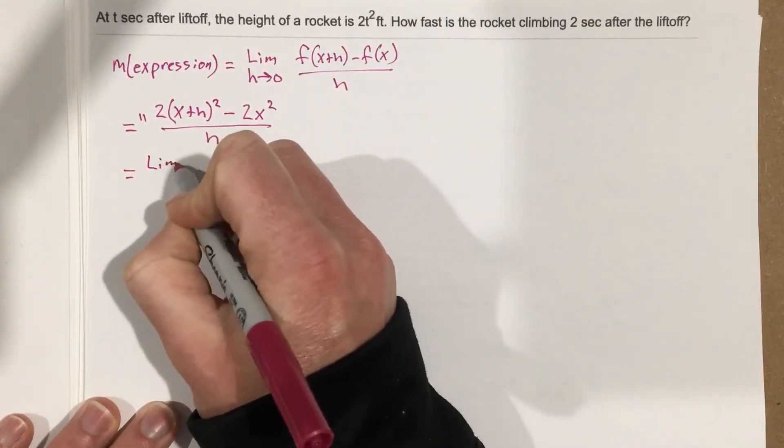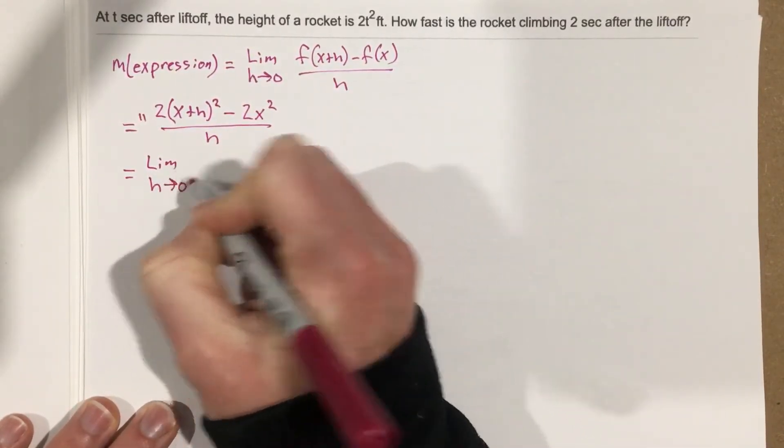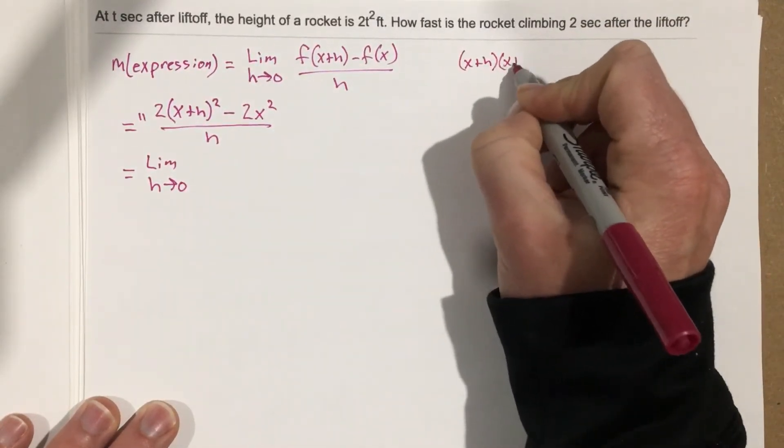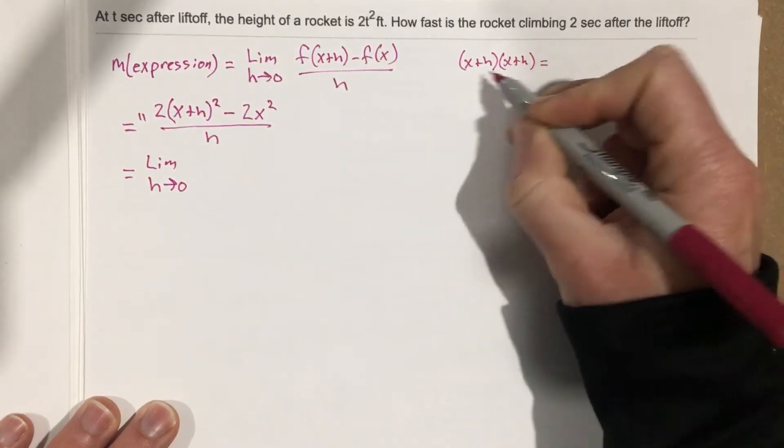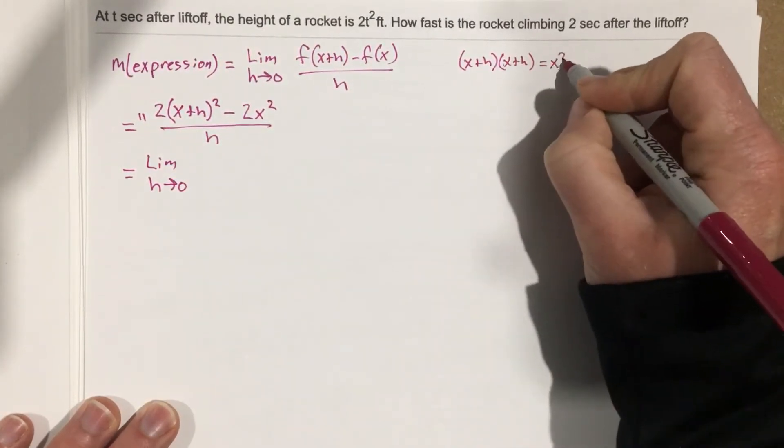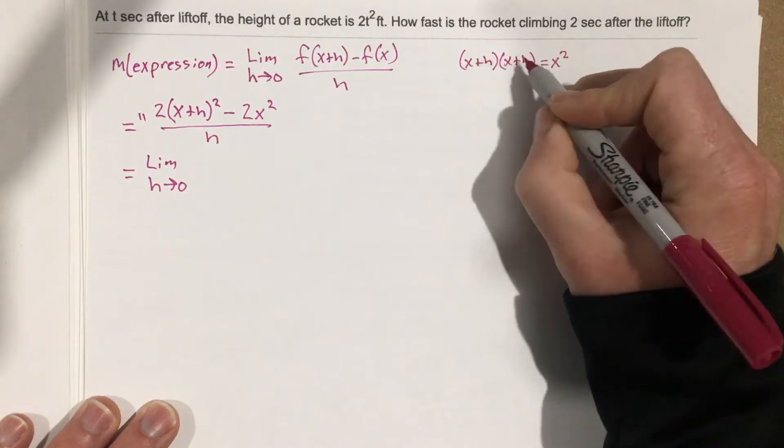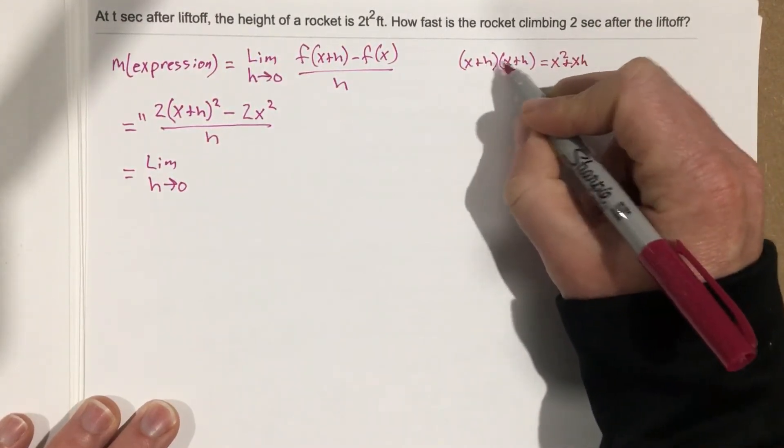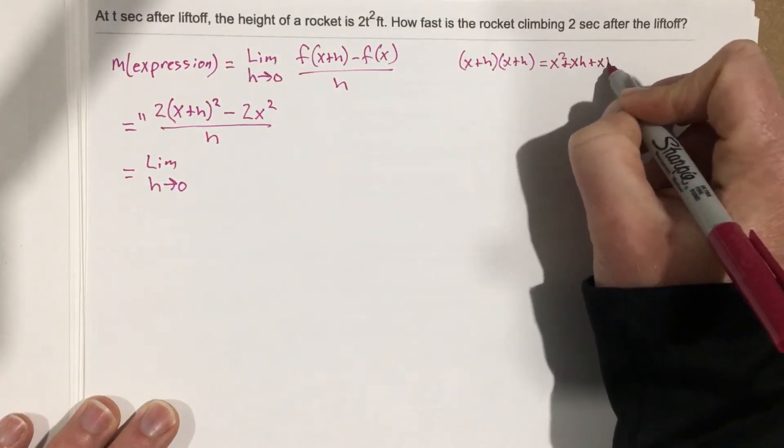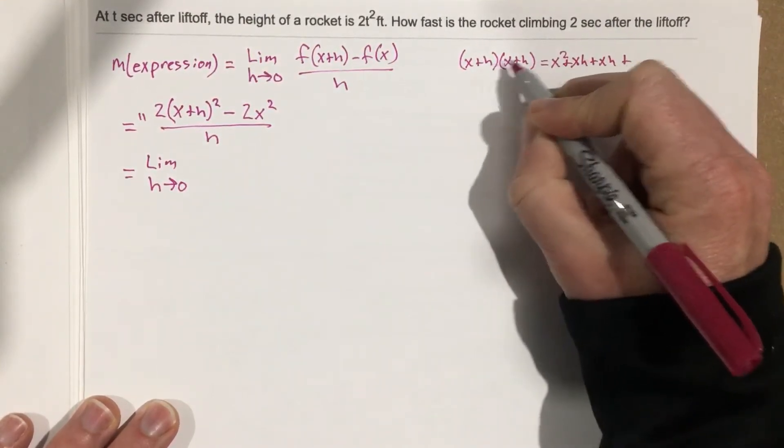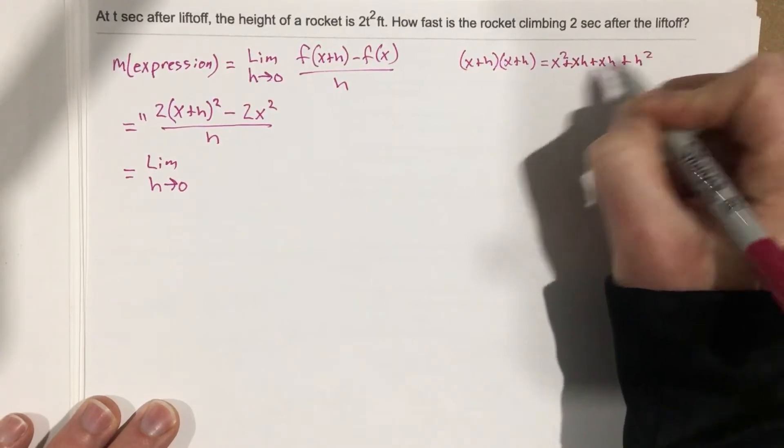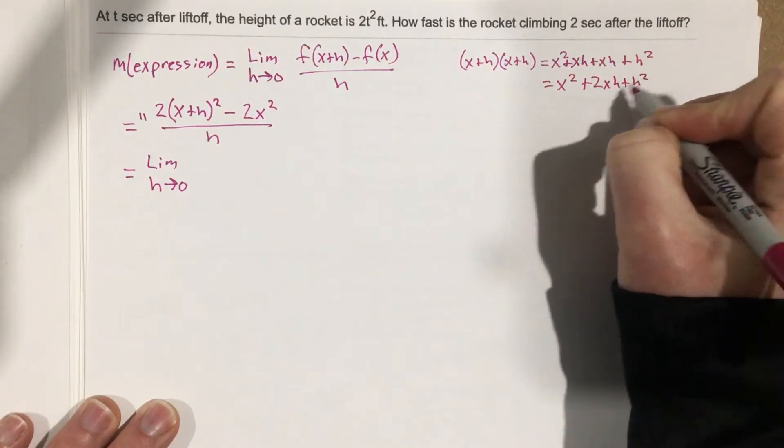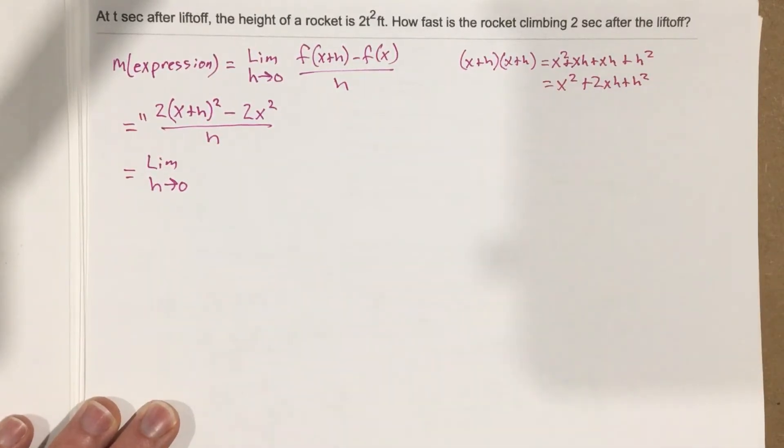So we get limit as h approaches 0. Let's take x plus h times x plus h. That's going to be x squared, x times x. x times h is xh. h times x is also xh, plus h times h, which is h squared. So we get x squared plus 2xh plus h squared when we square x plus h.